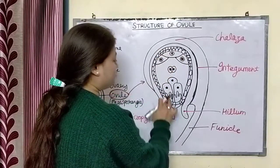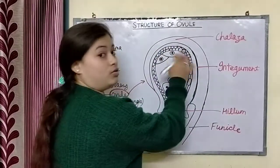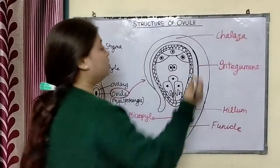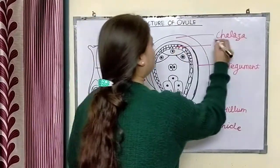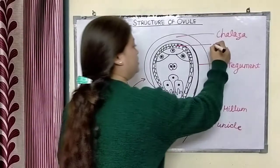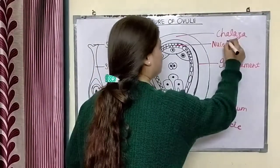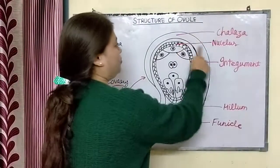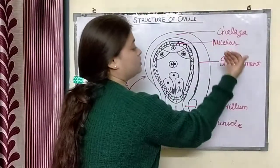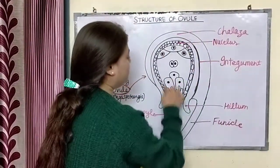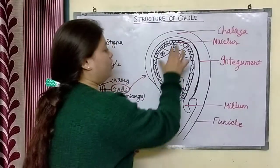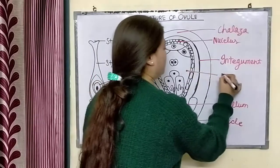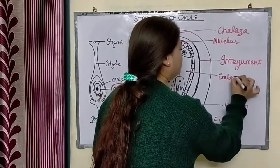After the integument, there is a complex structure — I have drawn it in a web-like or honeycomb pattern. This structure is called the nucellus. It is a covering layer. So the parts are: chalaza, nucellus, and integument — these form the inner part.